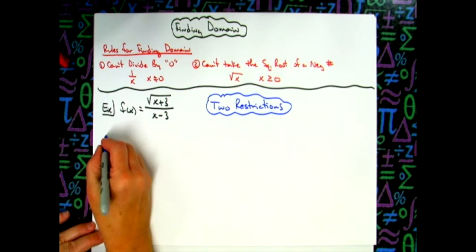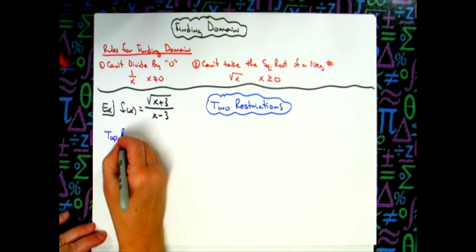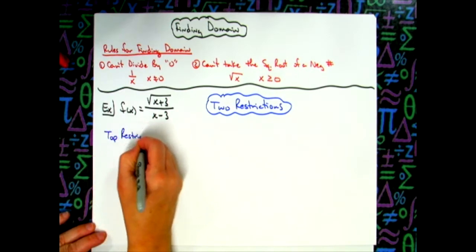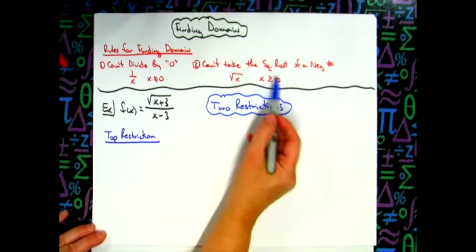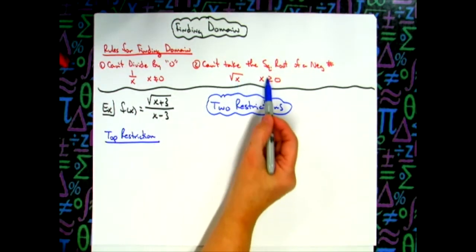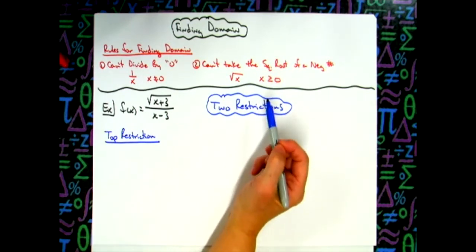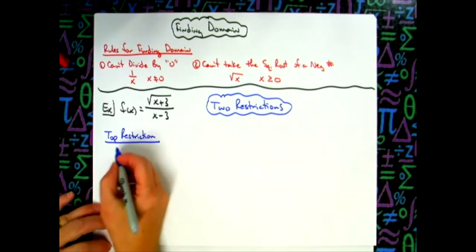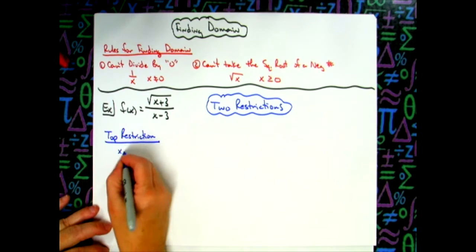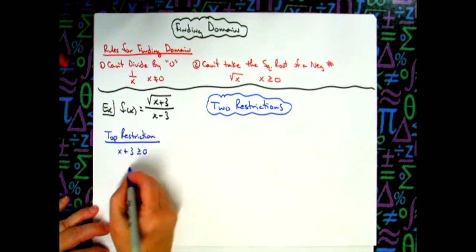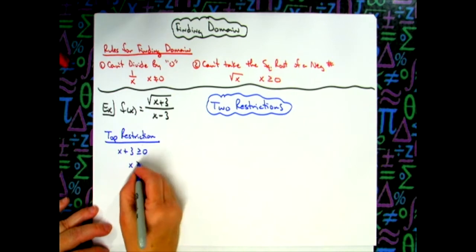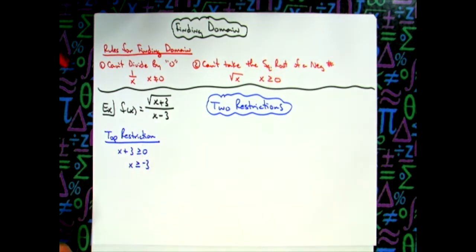Okay so our top restriction we'll do one of them at a time. Our top restriction is going to say it's a radical and I have to have what's underneath the radical greater than or equal to zero because I cannot take square root of a negative number. So that's what I'm going to work out algebraically. X plus three is greater than or equal to zero. Going ahead and subtracting three from both sides, X is greater than or equal to negative three. So there is my restriction for my top.